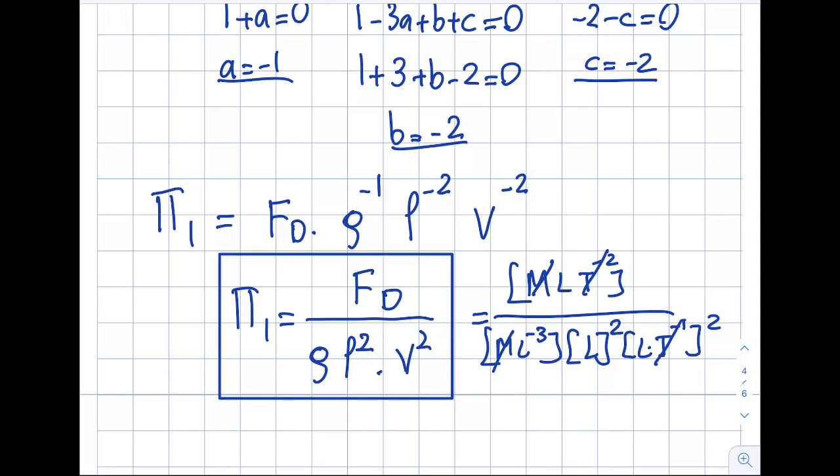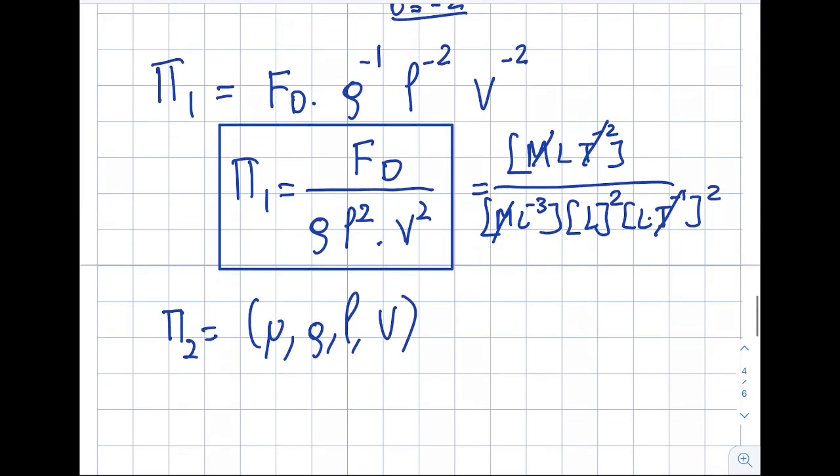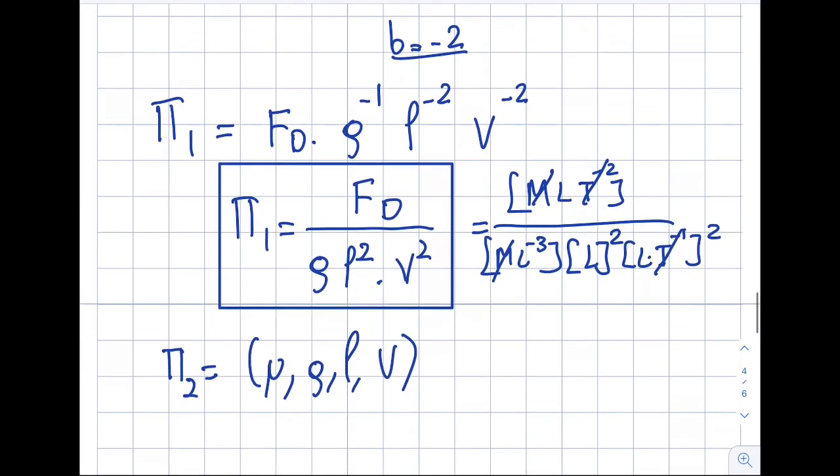Now I'm going to find the second pi term. We found the first pi term. The second pi term will be obtained by having viscosity, density, length, and velocity. You can go through the same process if you would like to, that we established over here. You can call it viscosity to the power of 1, density to the power of A, length to the power of B, velocity to the power of C, and go through this whole analysis. Or there's an alternative approach in here.